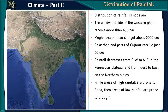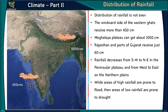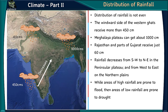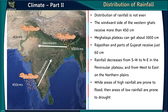The distribution of rainfall in India is not uniform. The windward side of the Western Ghats receives more than 450 cm, and the Meghalaya Plateau can receive up to 1,000 cm. Rajasthan and parts of Gujarat receive just 60 cm. Rainfall decreases from southwest to northeast on the Peninsular Plateau and from west to east on the northern plains. Areas of high rainfall are prone to flooding, while areas of low rainfall are prone to drought.